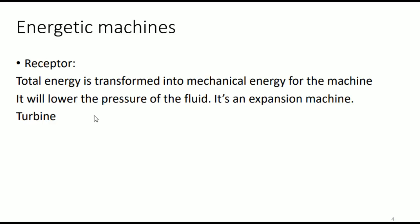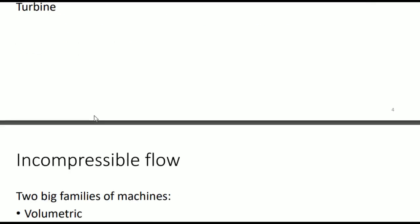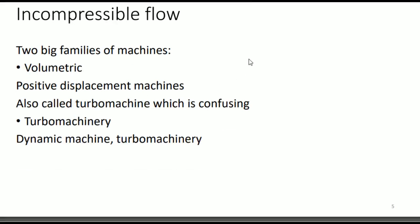We'll see a bit about volumetric machines, but first we need to define what an incompressible flow is — it's when there is no compression. You have two main families: volumetric machines, also called positive displacement machines, and turbomachines, which are dynamic machines. The naming can sometimes be confusing since turbomachines can also be referred to under the broader turbomachinery label in this course.